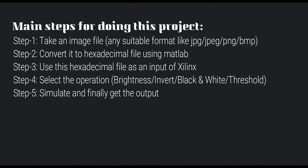There are 4 operations in the Verilog HDL code: brightness, invert operation, black and white operation, and threshold operation. We will do one operation at a time. For performing these operations, we will use that hexadecimal file generated earlier as our input, then we will simulate the Verilog code and finally get the output.